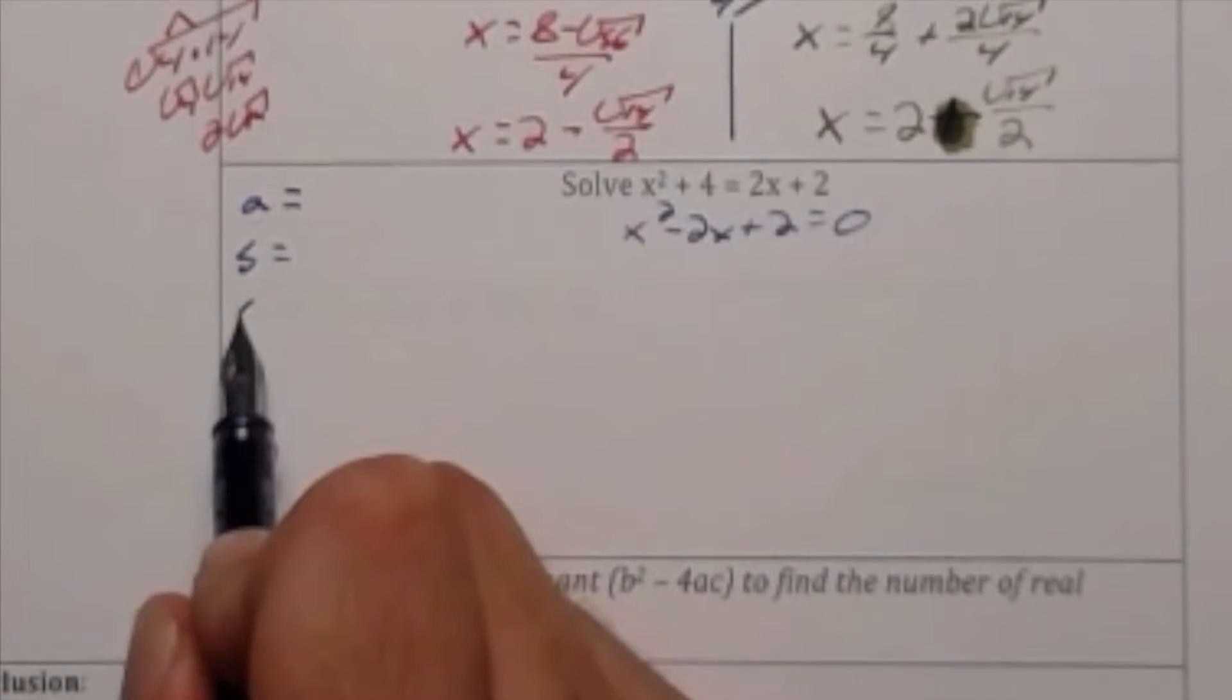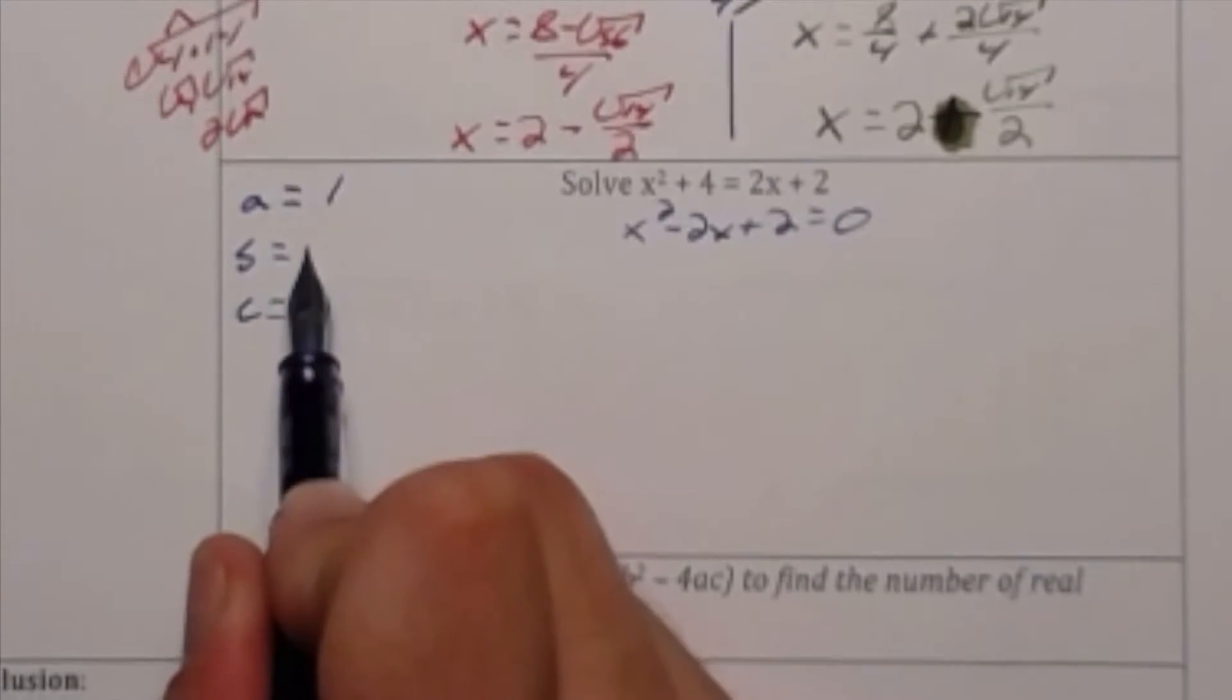And now I'm going to identify a, b, and c as 1, negative 2, and 2.